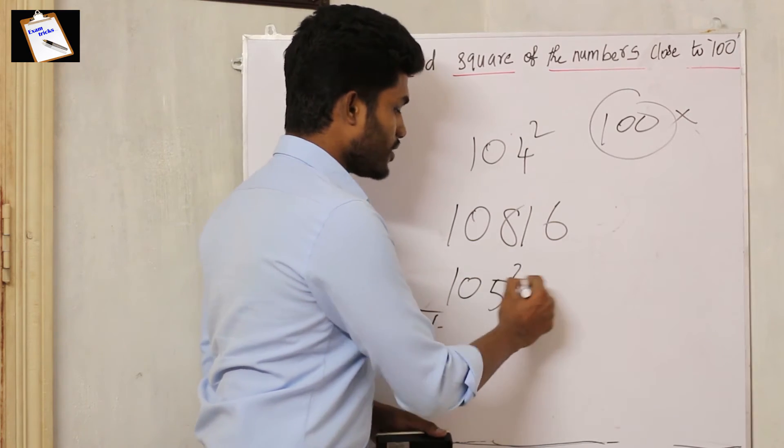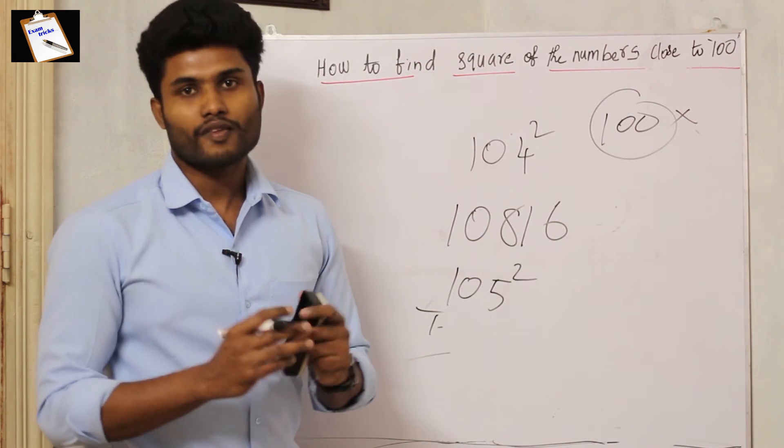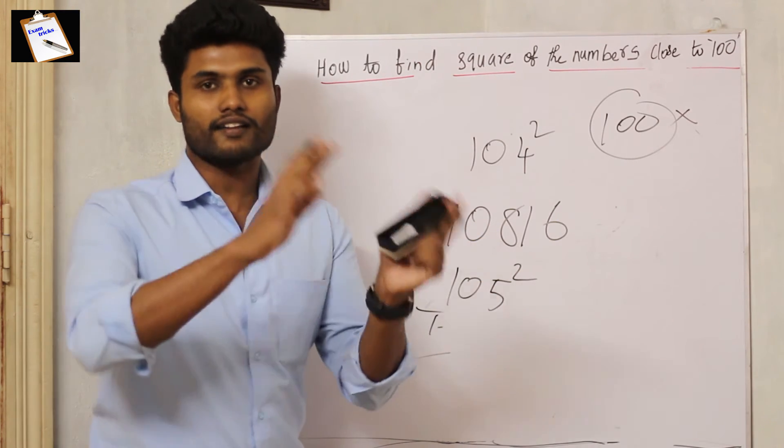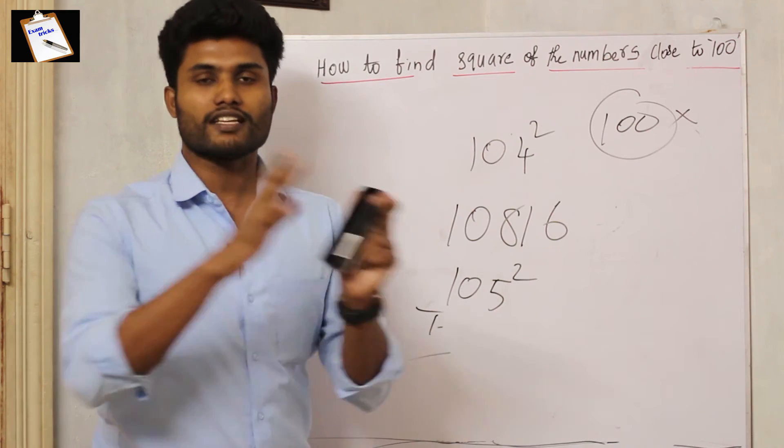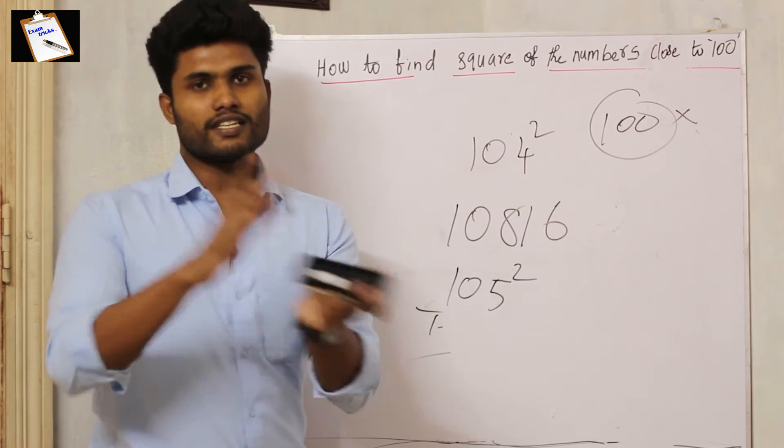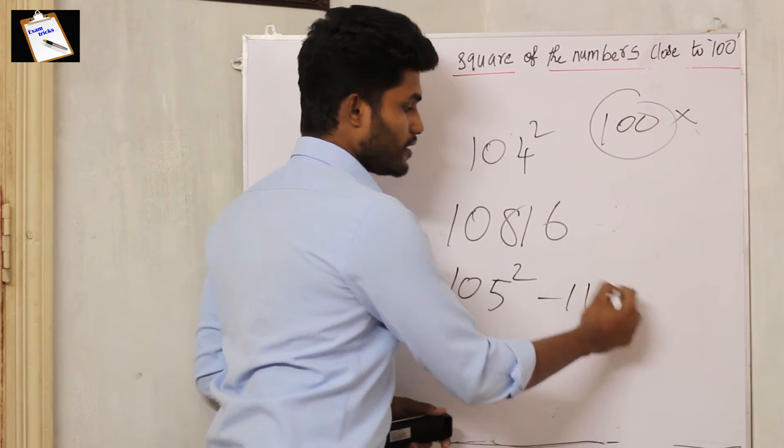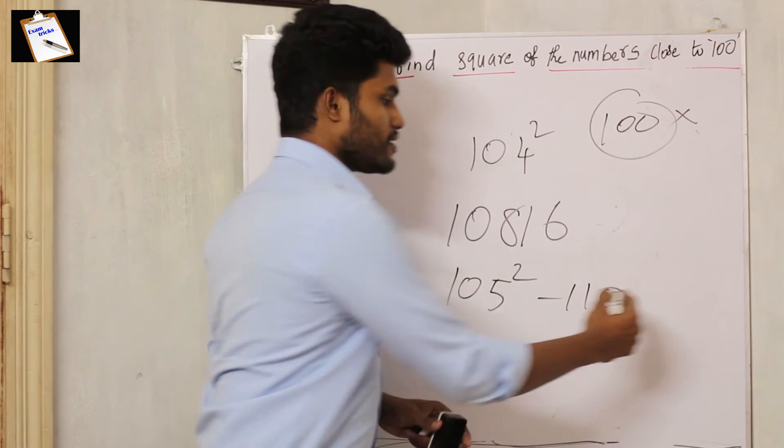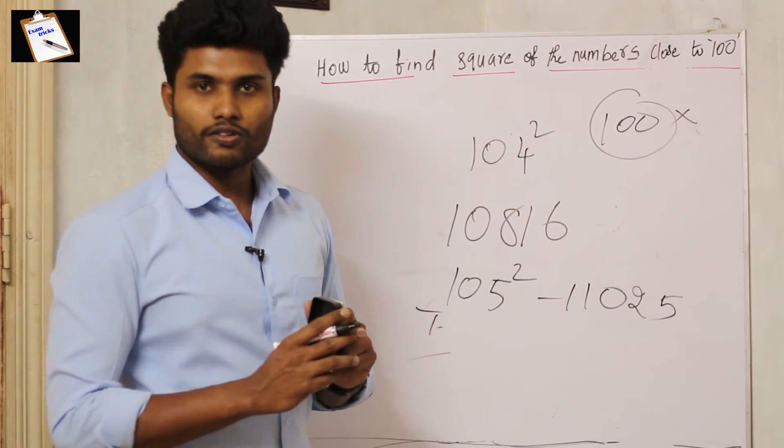For example, 105 square. The difference is 5, so the answer is 11025.